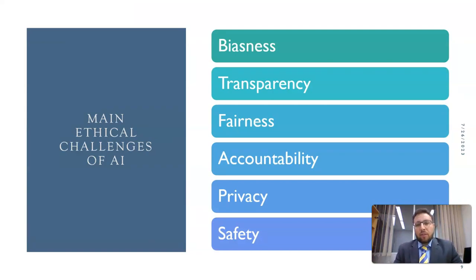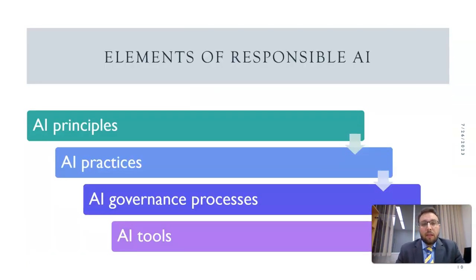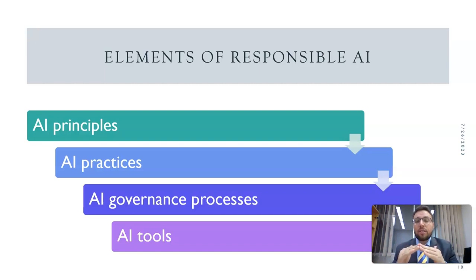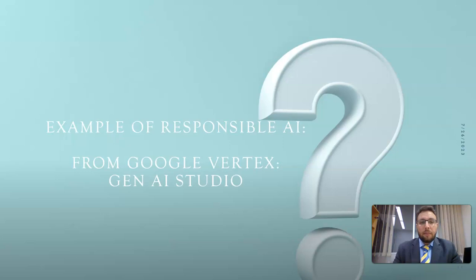The main challenges with AI include biasness in decision-making, transparency issues, fairness in decision-making, accountability, privacy, and safety to society. To address these challenges, we need responsible AI, which requires AI principles, AI practices, AI governance, processes and rules, regulations, and AI tools.